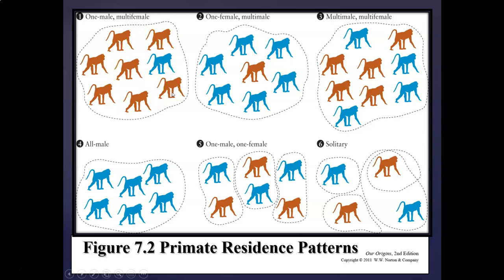Alongside these harem groups also exists what we call the bachelors or the all-male group. The bachelors exist on the periphery of these one-male multi-female groups, and their goal is essentially to take over the harem master. There is a video in the module on baboons that will look at both of these structures and how they work together.